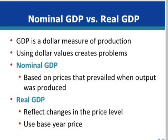GDP measures production at current dollar values, which creates problems because the value of a dollar changes over time. One hundred years ago, the purchasing power of one dollar was much different than it is today. To get around that problem, there are two different GDPs. Nominal GDP is based upon the prices that were in effect when the output was produced. A GDP that has been deflated or inflated to reflect changes in price levels is referred to as real GDP. In order to calculate real GDP, a base year must be selected and then the current year's prices adjusted accordingly.